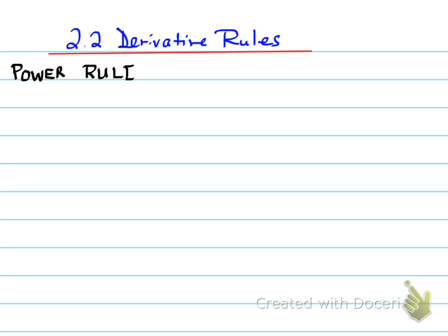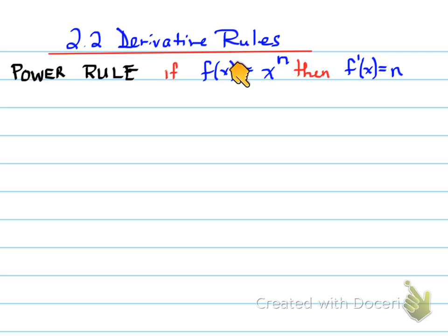The first one is called the power rule. The power rule states that if you have a function f(x) equal to x to the power of n, where n is some real number and x is the variable, then the derivative is equal to n times x to the power of n minus 1. You bring the exponent n in front and subtract the exponent by one.